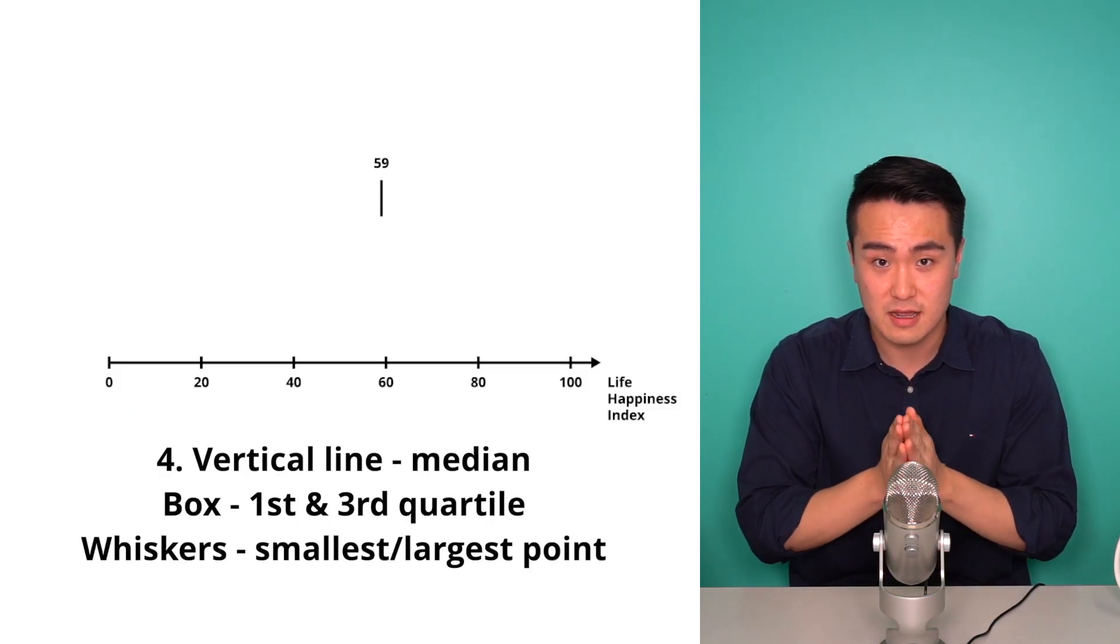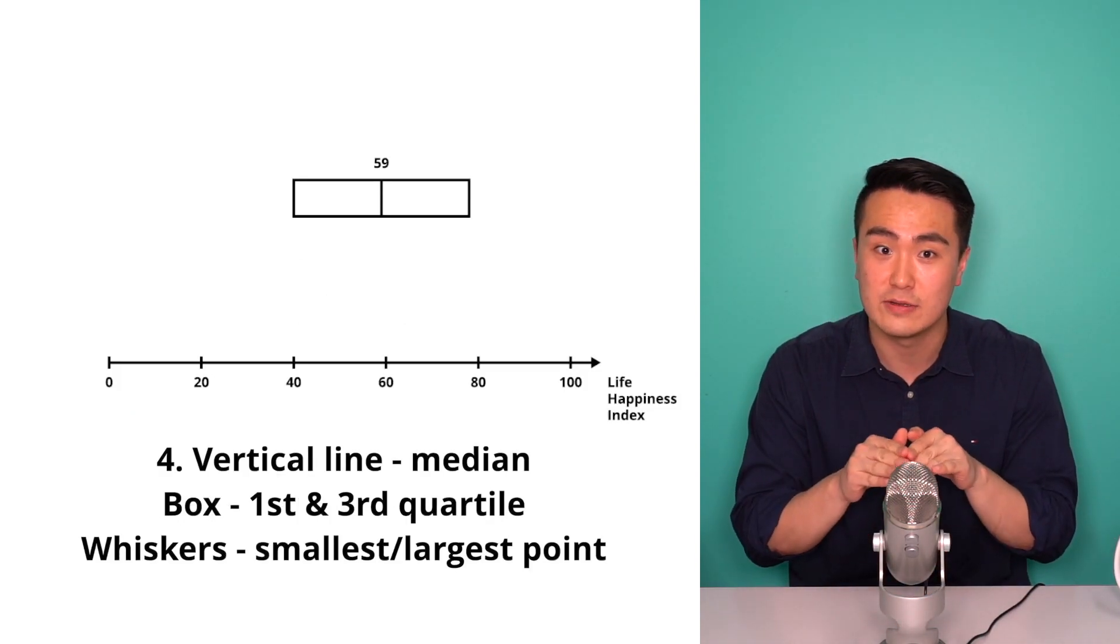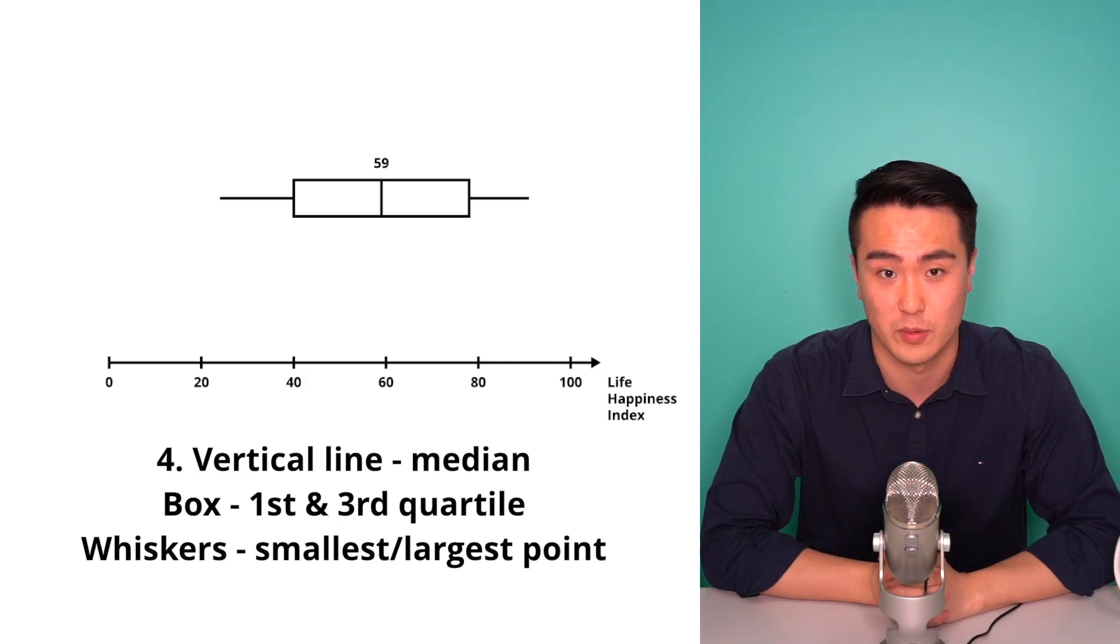Finally, draw a vertical line at the median, a box around your first and third quartile, and then whiskers to your smallest and highest data point.